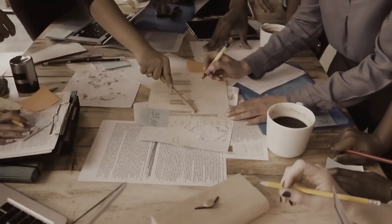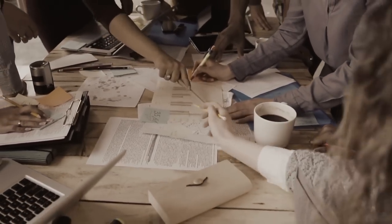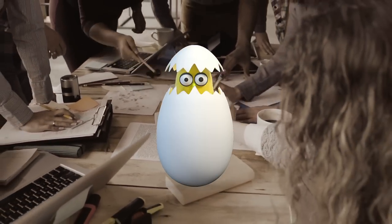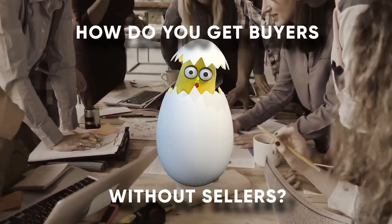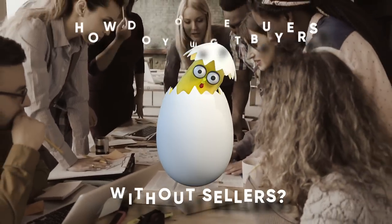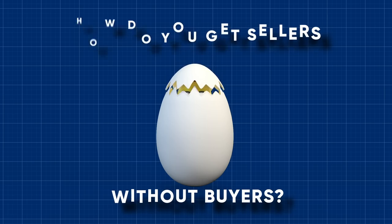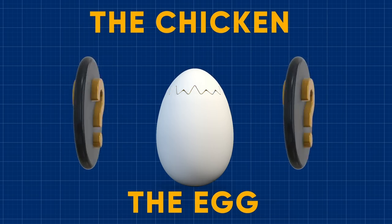Oftentimes, you'll hear startups that are trying to adopt a marketplace model refer to the chicken and egg problem. That is to say, how do you get buyers without sellers? And how do you get sellers without buyers? It's a chicken and egg problem. Which came first, the chicken or the egg?